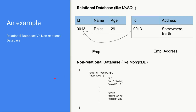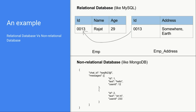Now let's look at the practical implementation of how data can actually be stored in a relational database. In our case study, suppose we want to store employee data. We can create a schema with one table named 'employee' and store data like employee ID, employee name, and employee age. This table contains basic data about the employee. Later, when we also need to store the employee's address, we can create another table called 'employee_address' and create a relationship between these two tables.